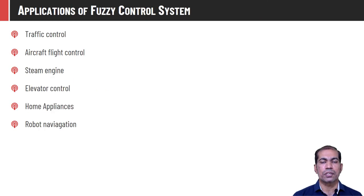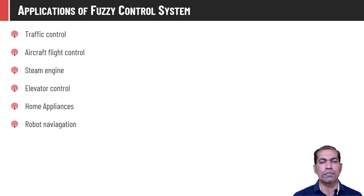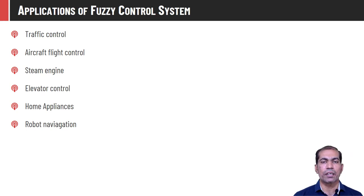Applications of fuzzy control systems span a very big spectrum. These include traffic control systems, aircraft flight control systems, steam engine systems, elevator control systems, and various home appliances like air conditioners, washing machines, and microwave ovens. Robot navigation can also be implemented very effectively with fuzzy control systems. The list of applications of fuzzy logic controllers is quite large.